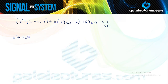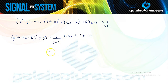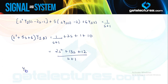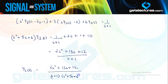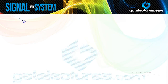Rearranging, (s² + 5s + 6)·Y(s) equals 1/(s+1) plus 2s plus 1 plus 10. Taking the LCM and adding gives 2s² + 13s + 12 upon (s+1). So Y(s) can be written as (2s² + 13s + 12) / [(s+1)(s² + 5s + 6)]. Factorizing the denominator gives factors s+2 and s+3.